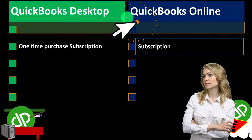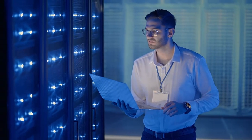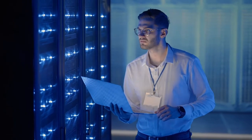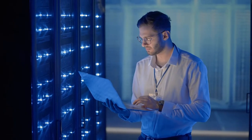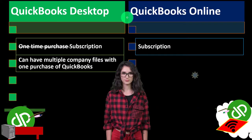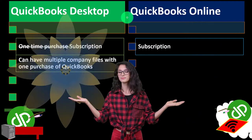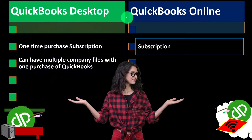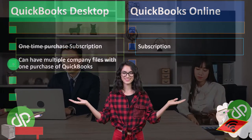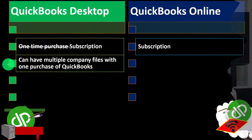Obviously, with QuickBooks Online, because that software is not on your computer at all — it's basically on the Intuit servers — they can update it anytime they want, which is kind of a convenient process for Intuit. That's one of the big differences, and some of the differences between the software will stem from whether they're desktop or online and where they're located. With the desktop version, you can have multiple company files with one purchase of QuickBooks.